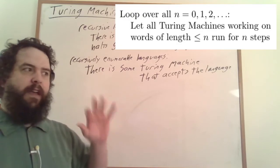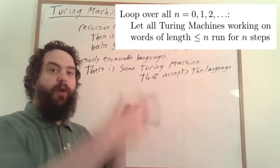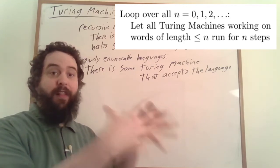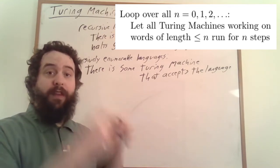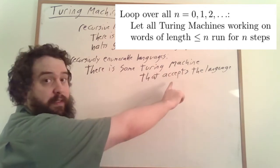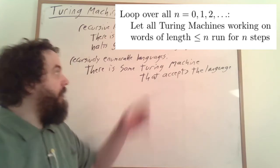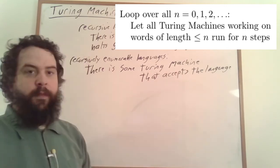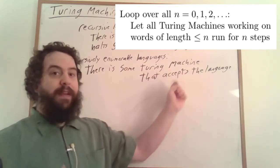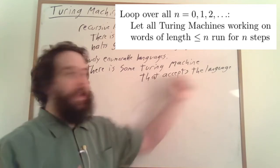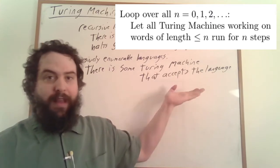Words not in the language it can either reject or just run forever and never get around to accepting. These are called the recursively enumerable languages because you can actually build a machine that lists out the elements of this language. You simply have a parallel processing sort of situation, slowly adding in new words into a giant parallel processing cluster, where each computer within that cluster is working on determining whether a particular word is in the language by running the Turing machine on that particular input. Anytime one of those machines accepts a word, it outputs it, and every word that is accepted is eventually going to get outputted.